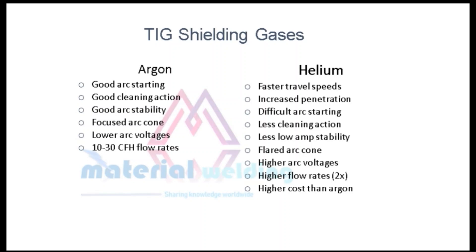The characteristics of argon gas are: good arc starting, good cleaning action, good arc stability, focused arc cone, and lower arc voltages. The characteristics of helium gas are: faster travel speeds, increased penetration, but with difficult arc starting, less cleaning action, less low-amperage stability, flared arc cone, and higher arc voltages. With helium, we need higher flow rates — almost double that of argon — as helium density is less. Helium also has a higher cost than argon.